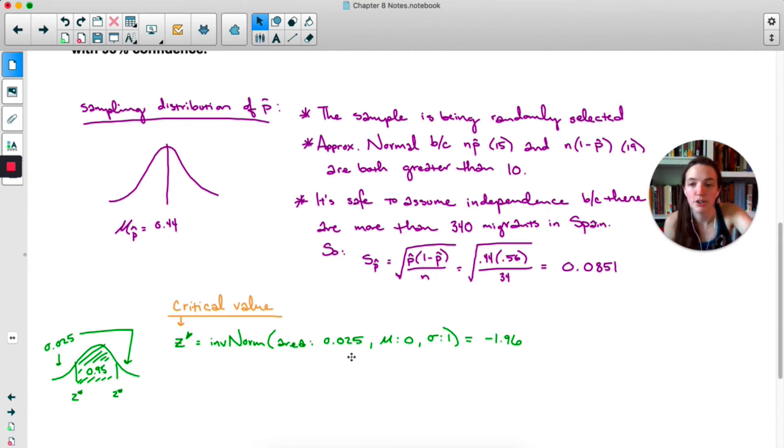So I'm doing 0.025, mean is 0, standard deviation is 1 because this is the standard normal distribution. And I get negative 1.96. So we know that this one is going to be positive 1.96. So that's very close to 2. 2 wasn't a bad estimate, it's pretty close. But this is going to be more accurate. This is actually 95% of the data instead of about 95% of the data.